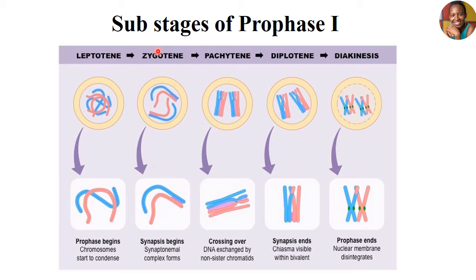To recap: sub-stage one is Leptotene, where Prophase I begins and chromosomes start to condense and become visible. At Zygotene, synapsis forms and we get synaptonemal complexes. At Pachytene, crossing over takes place and DNA is exchanged by the non-sister chromatids. At Diplotene, synapsis ends and chiasma becomes visible within the bivalents. Finally, in Diakinesis, the nuclear membrane has disintegrated and the spindle fibers have started to attach — this is the last stage of Prophase I.